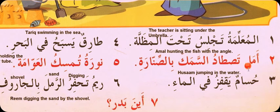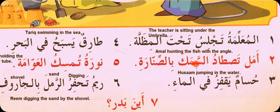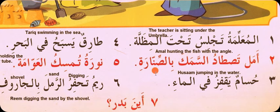'Amal tasaadu samaka bi-sunara' — 'Amal' is a girl's name, so we use 'ta' with the verb. 'Sunara' means hook or fishing rod. 'Sayd' means fishing or hunting, 'samaka' means fish. Note: 'seen' and 'swad' are sun letters (huruf shamsiyya), so we do not pronounce the 'lam' in 'al.' Amal is hunting the fish with the angler/hook.